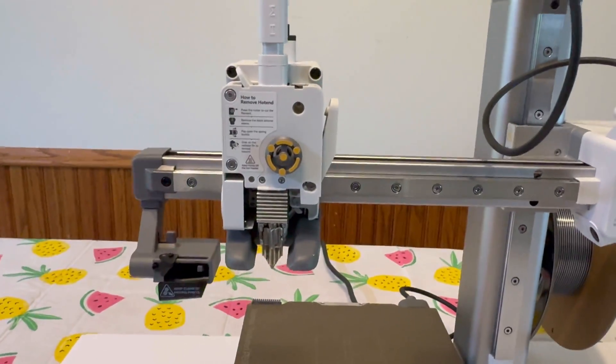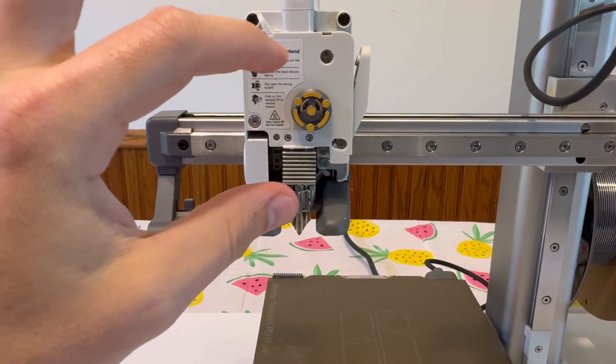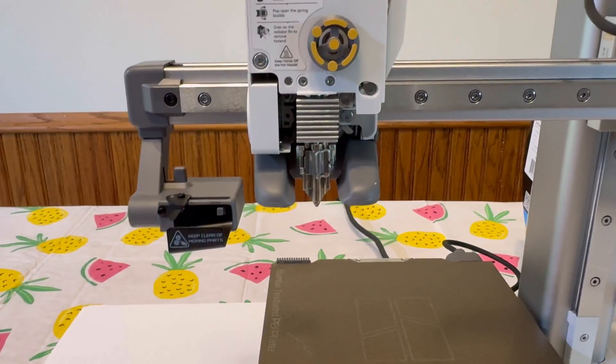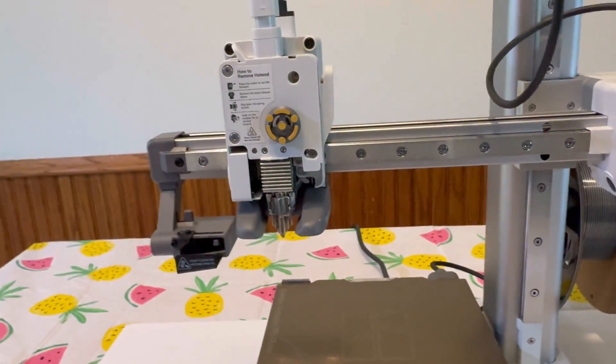Essentially, what we're doing is we're heating up that chunk of filament in there and hoping that it sticks to the part that's stuck down in the extruder. And then when we cool it down, it's going to stick, and we can just pull it out.